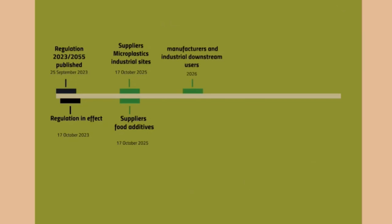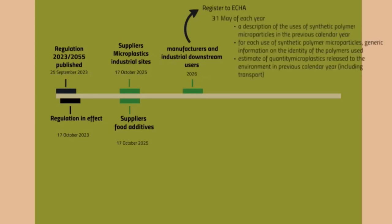Manufacturers and industrial downstream users — as of 2026 — should start registering to ECHA. On the 31st of May of each year, they would have to register a description for the use of the synthetic polymer microparticles for the previous calendar year, for each use of the polymer, including generic information about the identity and an estimate of the quantity of microplastics released in the environment in the previous calendar year, including transport.